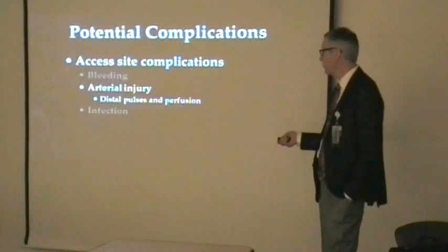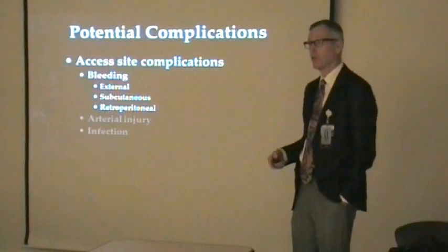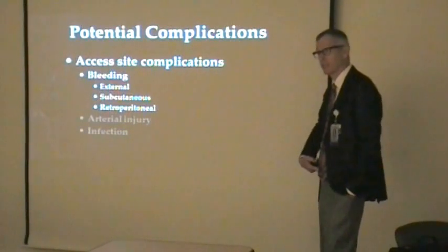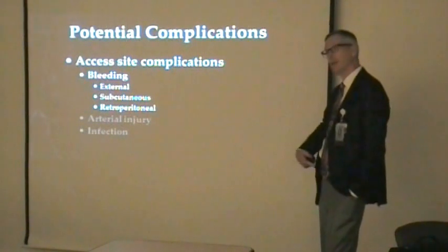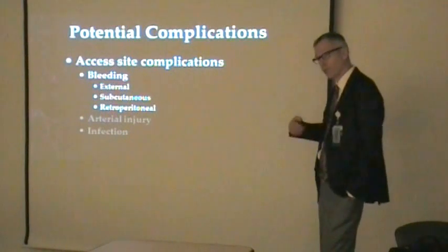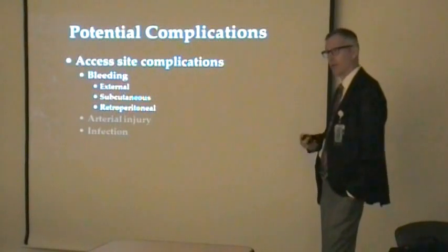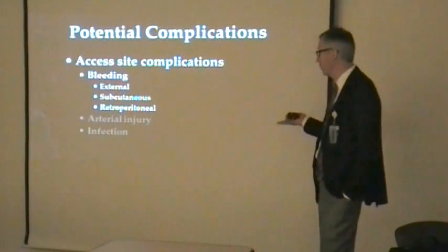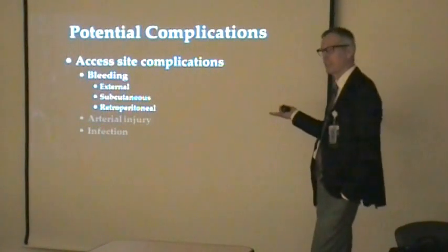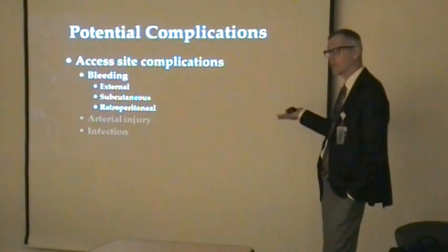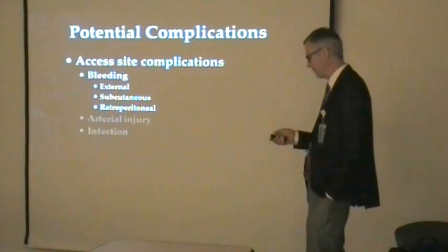The most concerning bleeding is retroperitoneal hemorrhage. I use ultrasound to gain single-pass access below the inguinal ligament and below the inferior epigastric artery to reduce this risk. If it occurs, the patient shows signs of volume loss — often not tachycardic but actually bradycardic — dropping blood pressure, and starting to have back pain. Be concerned if that combination is occurring.